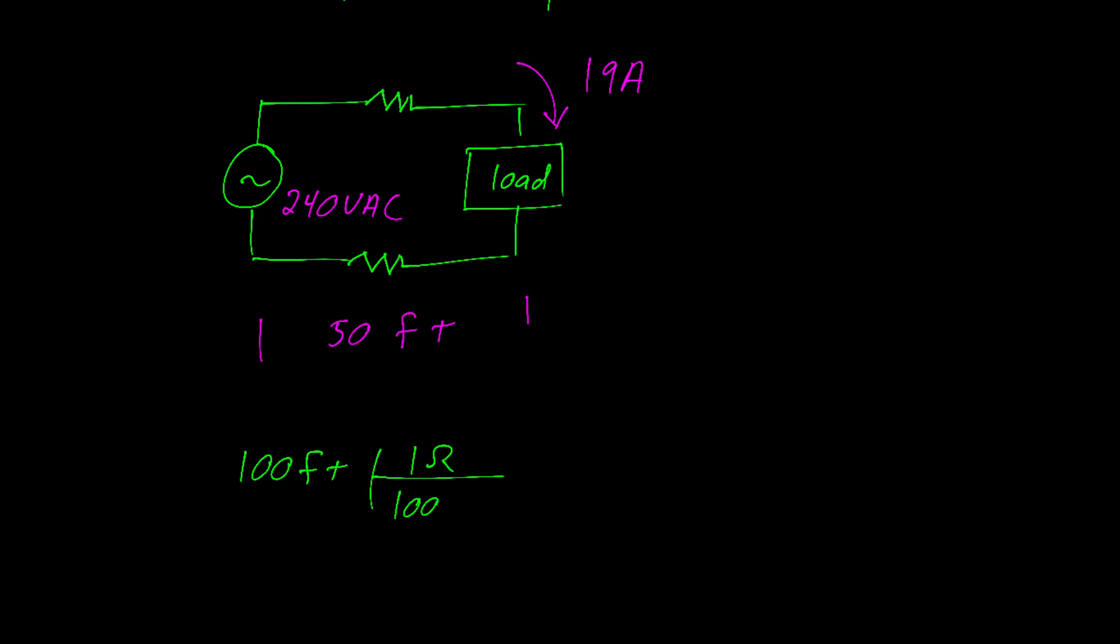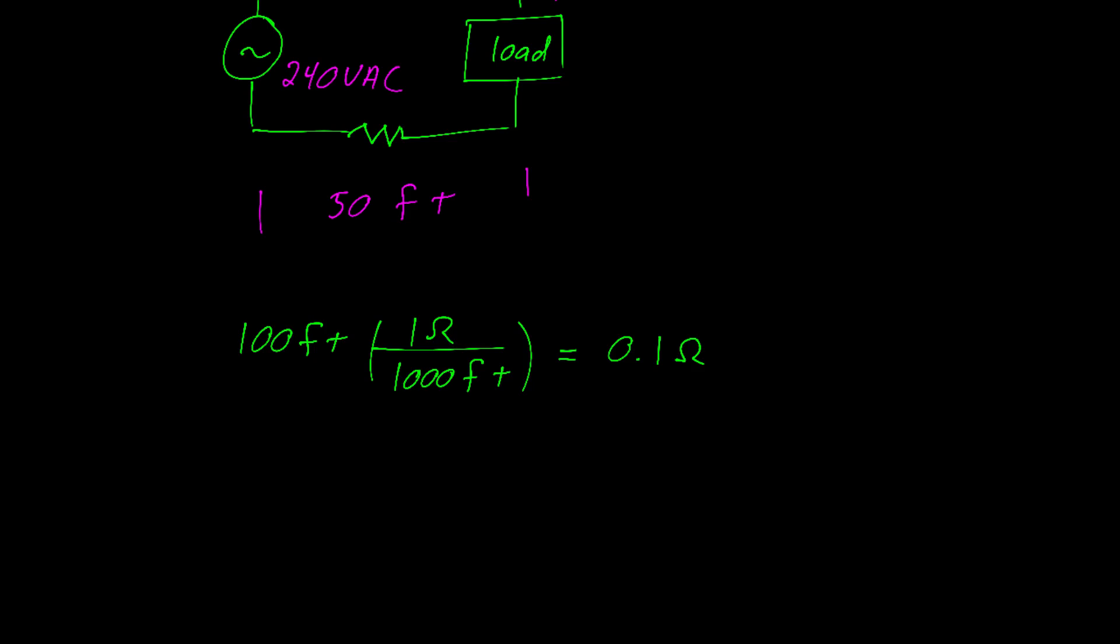Using dimensional analysis, we take our 100 feet of wire and multiply it by 1, which in this case is 1 ohm equals 1,000 feet, which gives us 0.1 ohms.